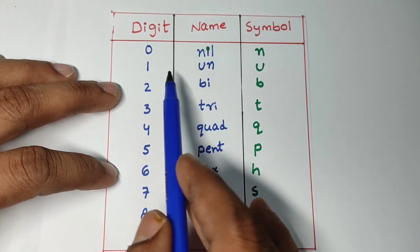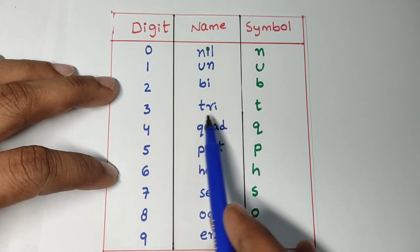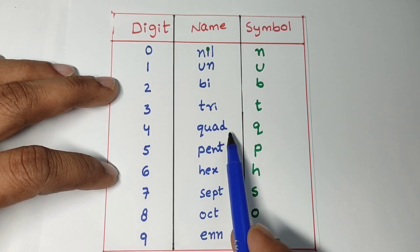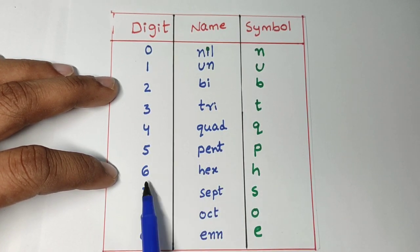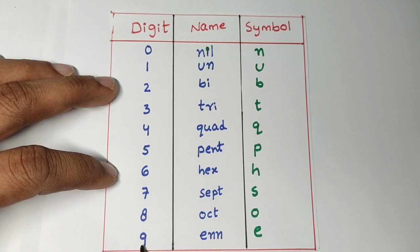For 0, nil. For 1, un. For 2, bi. For 3, tri. For 4, quad. For 5, pent. For 6, hex. For 7, sept. For 8, oct. For 9, enn.